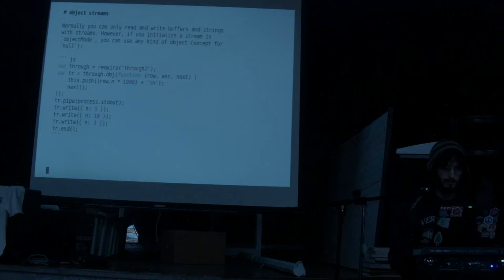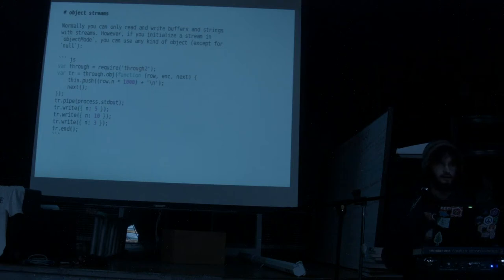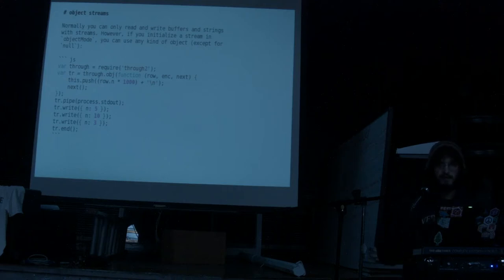Another kind of stream that's often really handy is called an object stream. Streams have this property called backpressure — basically if you don't call next, the data doesn't keep coming. The underlying file system knows not to send more data if it's not needed.